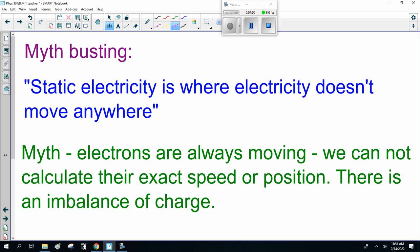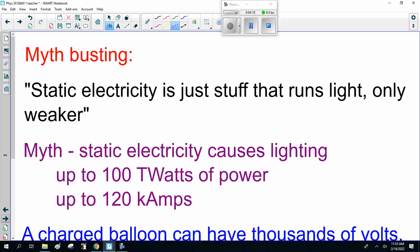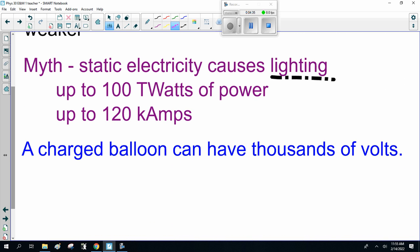Myth-busting. Static electricity is where electricity doesn't move anywhere. That's a myth. Electrons are always moving. We cannot calculate their exact speed or position. Myth-busting. Static electricity is just the stuff that runs light, only weaker. That's a myth. Static electricity causes lightning up to 100 terawatts of power, up to 120 kilo amps. A charged balloon can have thousands of volts. Voltage tells you the energy of the electrons. Current tells you how many electrons you have.